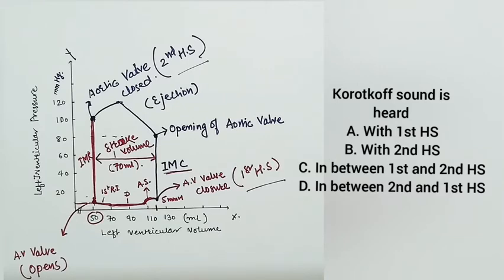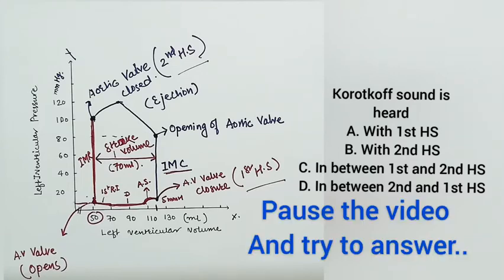Question: Korotkoff sound is heard — option A: with first heart sound; option B: with second heart sound; option C: in between first and second heart sound; option D: in between second and first heart sound.